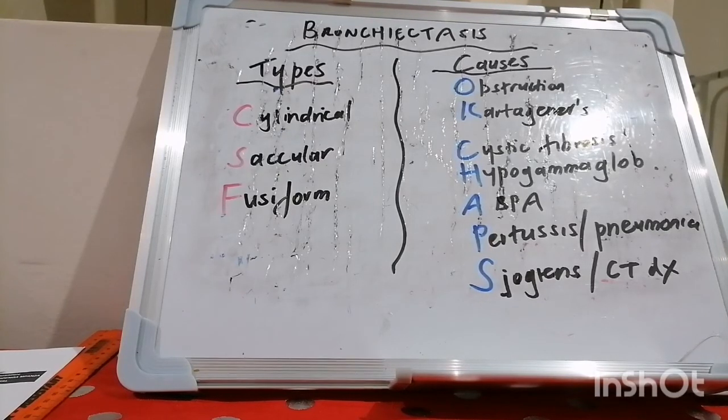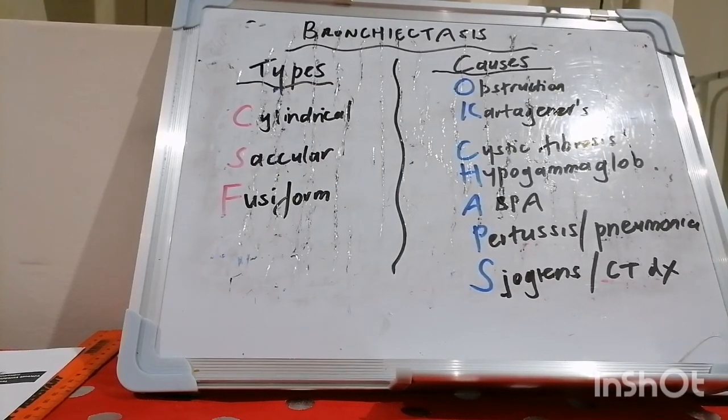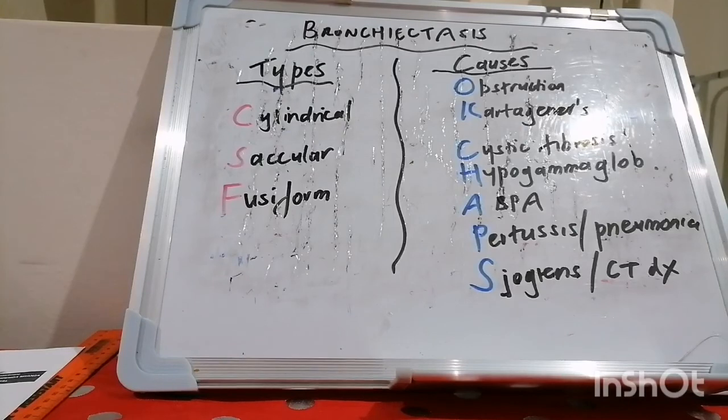So there you have bronchiectasis. Subtypes CSF: cylindrical, saccular, fusiform. Causes: OK CHAPS. God bless you, have yourself an amazing day.